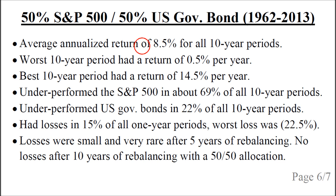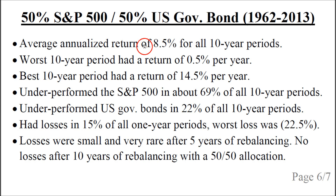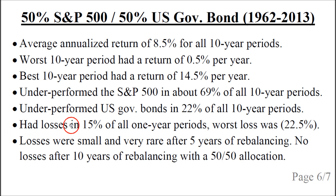Remember that a full investment in the S&P 500 had an average annualized return of 10.1% for all 10-year periods, the worst 10-year period had a loss of 4% per year, and the best 10-year period had a return of 19.8% per year. So because we are rebalancing between the S&P 500 and US government bonds, we don't have any losses, but the average long-term performance is not as good as a full investment in the S&P 500. The rebalancing underperformed the S&P 500 in about 69% of all 10-year periods, and underperformed US government bonds in about 22% of all 10-year periods. The rebalancing had losses in 15% of all 1-year periods, and the worst loss was 22.5%.